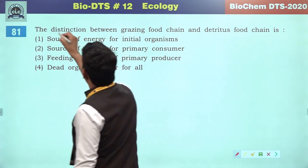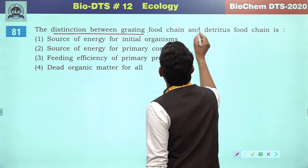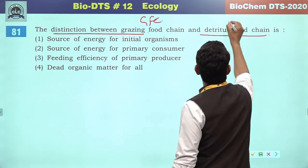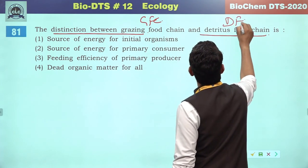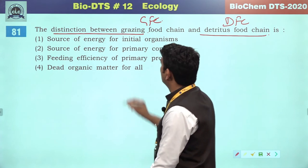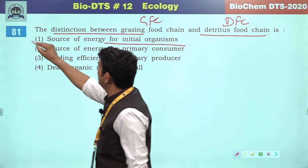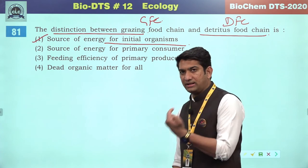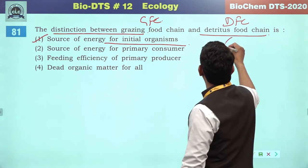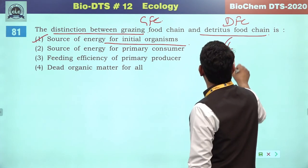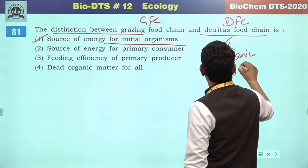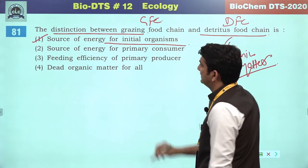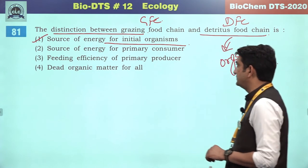The distinction between grazing food chain (GFC) and detritus food chain (DFC) is based on the source of initial energy. In GFC, solar radiation or sunlight is the source of energy. In DFC, dead organic matter is the source of energy through the process of decomposition, which leads to the cycling of nutrients.